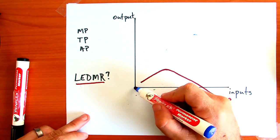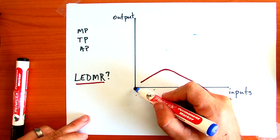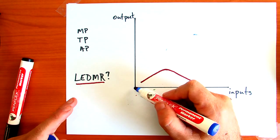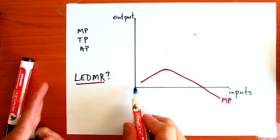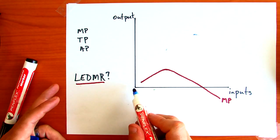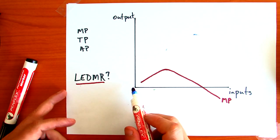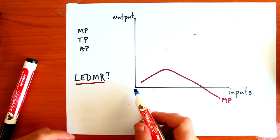So total production does start at the origin, because it is possible for a company to exist and have zero inputs and zero outputs. That's possible. For example, you could have a factory with no machines or people, therefore no production would occur.